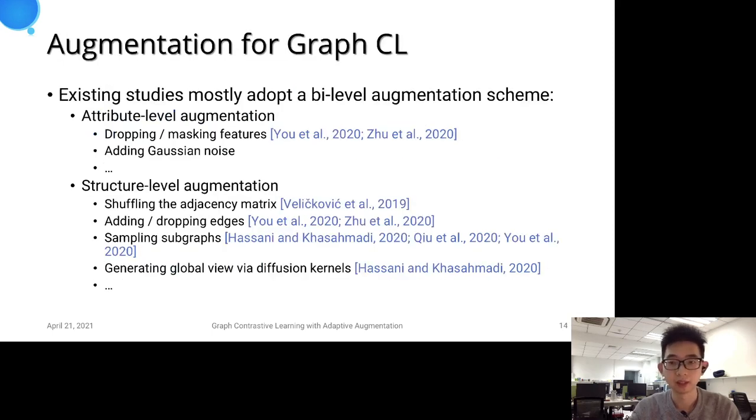Another critical design consideration is data augmentation for graph-structured data, which transforms the original graphs to congruent counterparts. Most existing work adopts a bi-level augmentation scheme consisting of both structure-level and attribute-level augmentation.